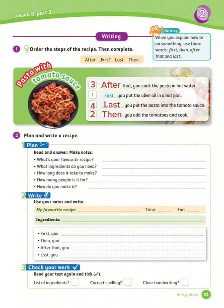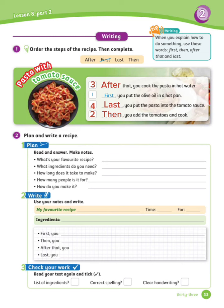Exercise number 2: Plan and write a recipe. To plan your recipe and write it, you need to figure out what your favorite recipe is. When you start to write, use these phrases: 'My favorite recipe is...', add the time and how many people it's for, add the ingredients, then use 'first', 'then', 'after', 'last' to order your steps.